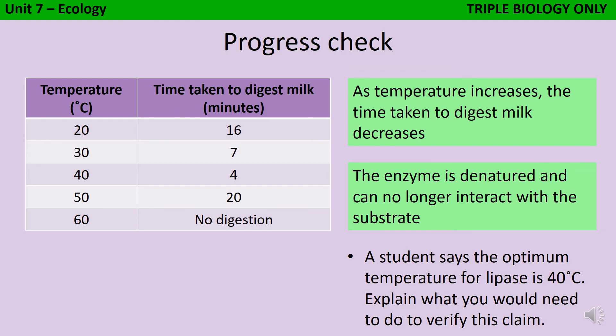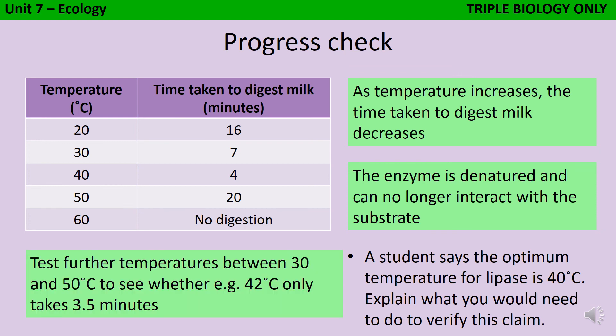A student says that the optimum temperature is 40 degrees, but I don't actually know that for certain. I know that 40 degrees is a more appropriate temperature than 30 and more appropriate than 50, but I don't actually know whether the optimum could be 42 or 38. So what I need to do is repeat the experiment using more temperatures and they obviously need to be temperatures between 30 and 50. I'm not going to suddenly find that 52 would be a more appropriate temperature. So I should repeat using further temperatures between those two boundaries.